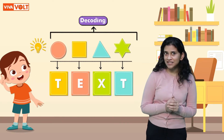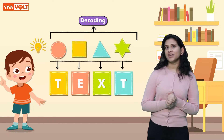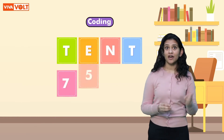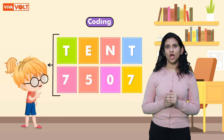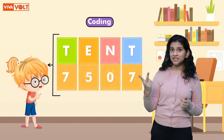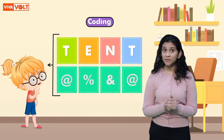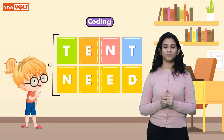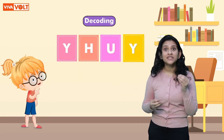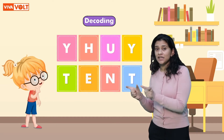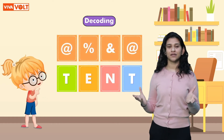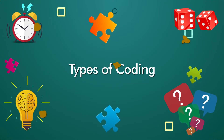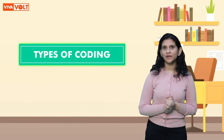Let's see how he understands the message. He simply decodes the message, and this process is called decoding. Isn't it interesting? Now let's learn about coding and decoding in detail. Coding refers to the process of writing a secret message to be sent to someone. Codes can be written using letters, numbers, and symbols. We can also substitute the names of certain things with the names of other things in the process of coding. Decoding, on the other hand, is the process of finding the actual meaning of the coded letters, numbers, and symbols.